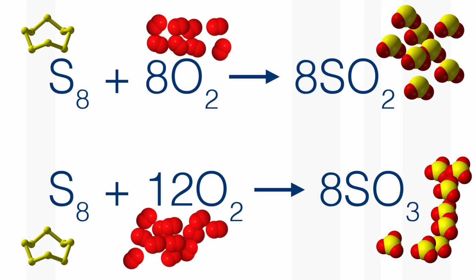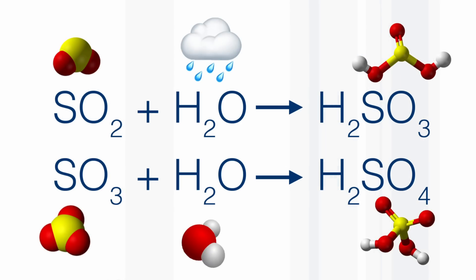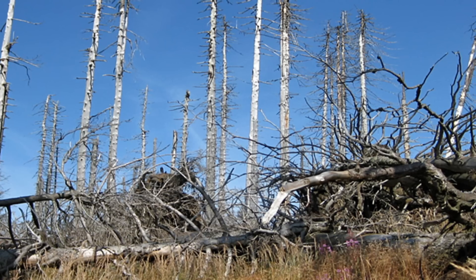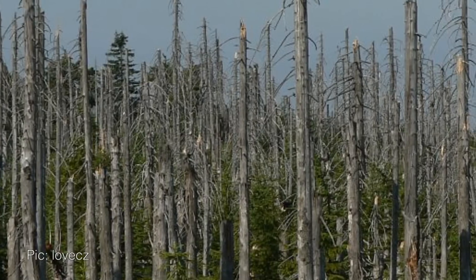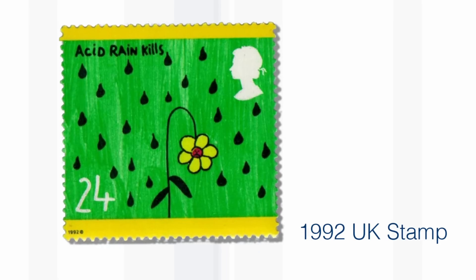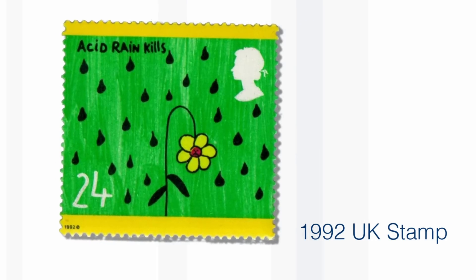When it rains, SO2 and SO3 dissolve in the water to give either sulphurous or sulphuric acid. Acid rain has caused huge environmental problems, particularly killing forests, because trees like pine trees normally do not grow on very acid soil. On the east coast of the United States, some of the acid rain had a pH between that of lemon juice and battery acid.